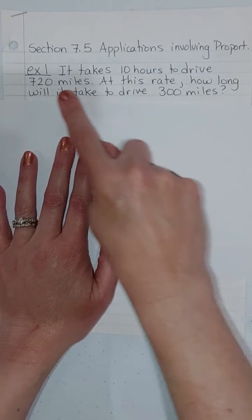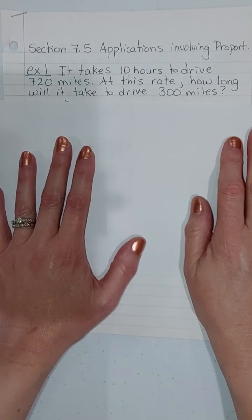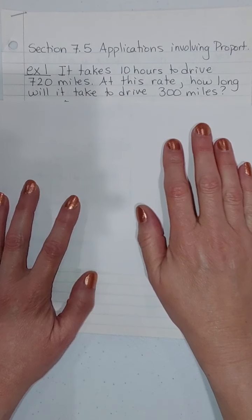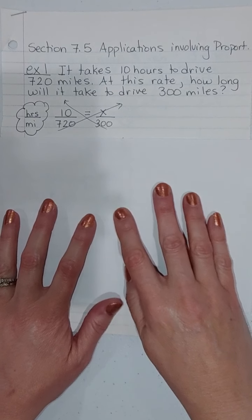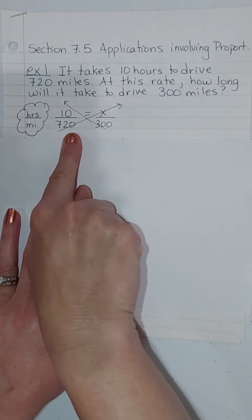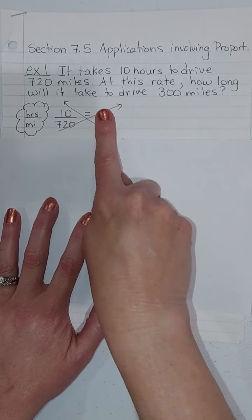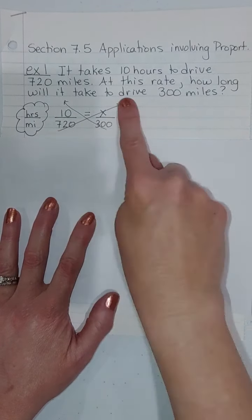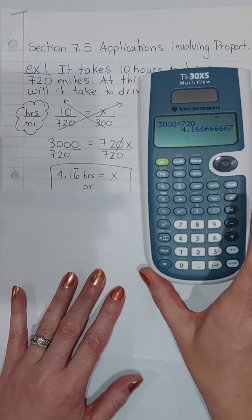If it takes 10 hours to drive 720 miles at this rate, meaning at the same speed, how long would it take to drive 300 miles? So we're going to set up a proportion here of 10 hours. You don't have to do it this way. If you can do some division and figure it out on your own, that's awesome. I'm just going to show you a systematic way of doing it. I set it up as hours divided by miles. So 10 hours takes you 720 miles, so how many hours takes you 300 miles? We're going to cross multiply. I get 300 times 10 is 3000 and 720 times X is 720X. Divide both sides by 720.